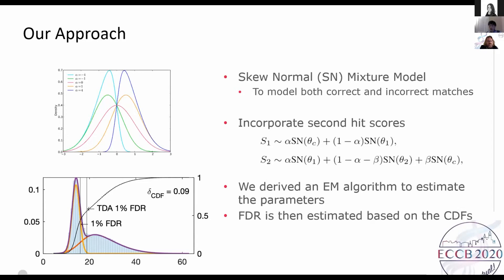We also incorporated second hit scores to assist estimation. We consider the second score as a mixture of three components: the correct one as in the top hit, another incorrect distribution, and a part-correct that's lower than the top incorrect. We derived the algorithm to estimate the parameters, then estimate FDR over threshold using the CDFs. When the first one is correct, the second score should come from the same distribution. When the first one is incorrect, there are two possibilities: either it also is incorrect and comes from another incorrect distribution, or it could be correct and comes from the distribution where the first score is correct.